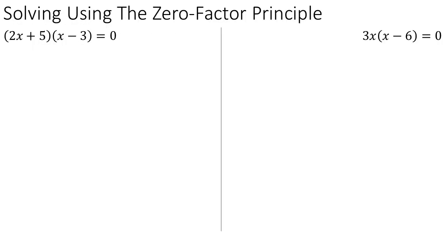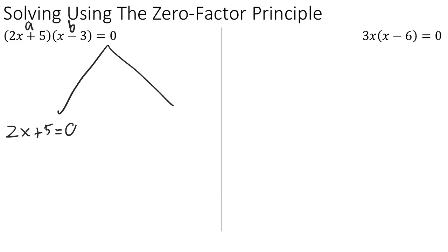Now let's do some slightly more complicated examples. In the first one, we have (2x + 5)(x − 3) = 0. When we see something equals 0, we should always think about using the zero factor principle. We need to identify what two things are being multiplied together. On one hand, we have 2x + 5, and on the other hand, x − 3. Those are playing the role of a and b. So we split into two possibilities: either 2x + 5 = 0 or x − 3 = 0. We've taken our single complicated equation and turned it into two simple equations.